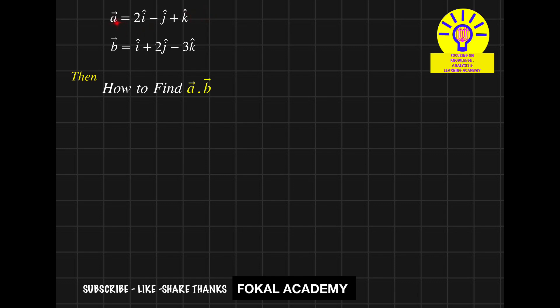Here two vectors are given, vector A and vector B. Now you're asking how to find the dot product between the given two vectors.